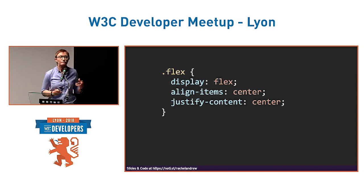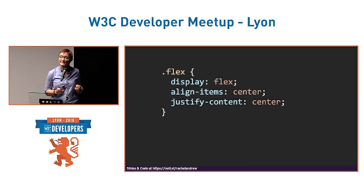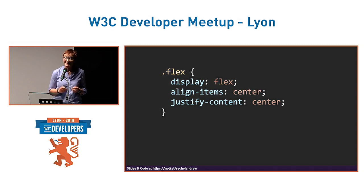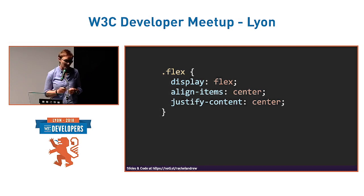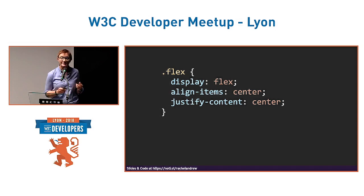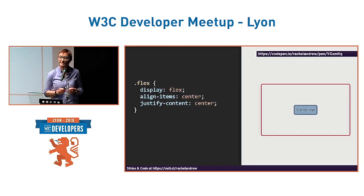We tend to think about Flexbox for groups of items, and that's really what it was designed for. But flex layout is currently the best way to center an item both horizontally and vertically — something which has been bafflingly difficult for most of the time I've been a web developer. You need to make your parent a flex container and then use justify-content and align-items set to center, which centers our box with minimal fuss.